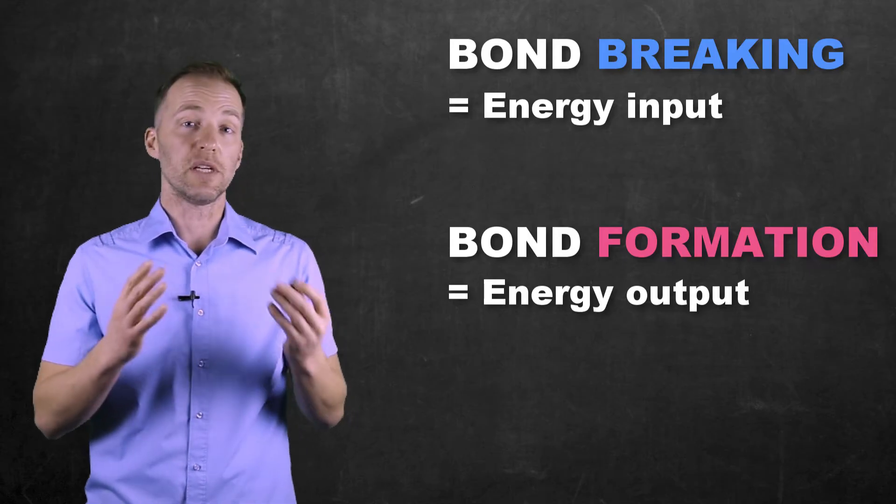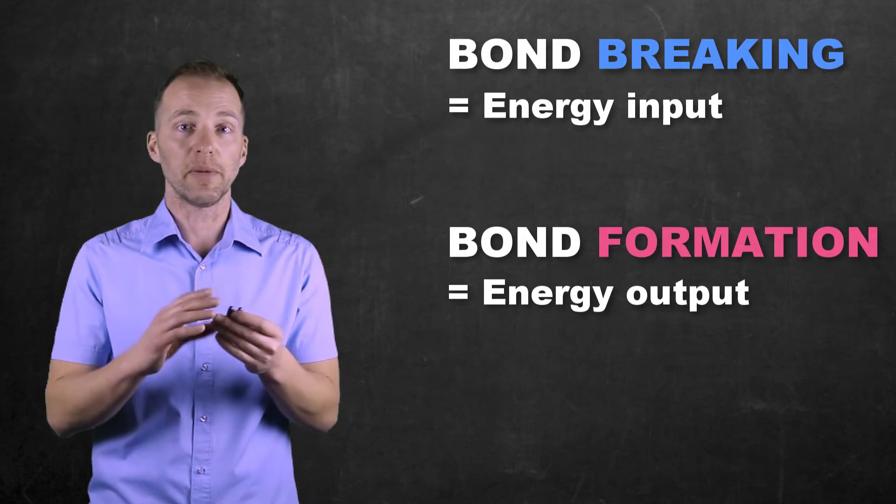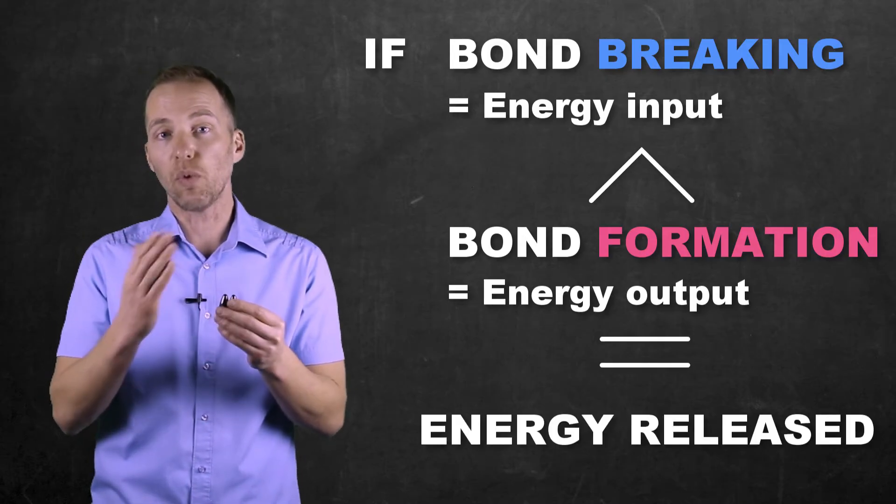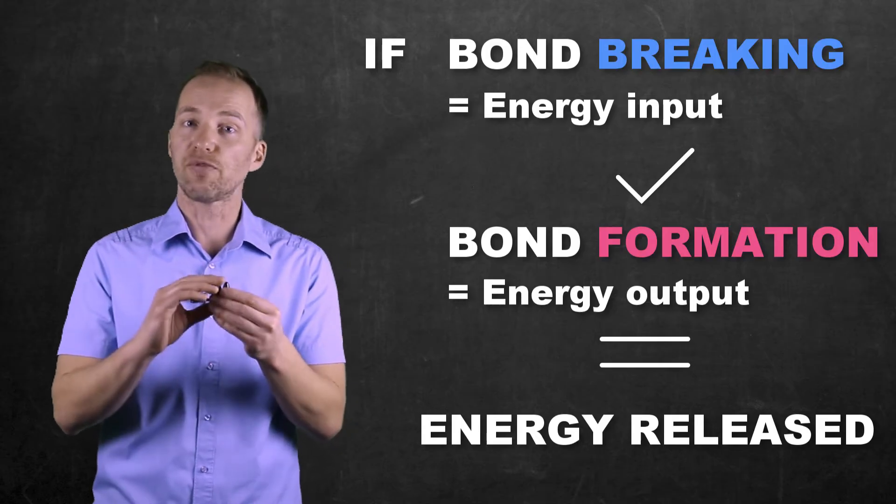There's going to be a discrepancy or a difference in these two values, and whatever that is, is ultimately going to result in a net release of energy to the surroundings, or a net requirement of energy from the surroundings.